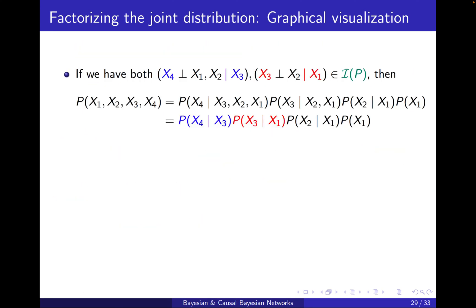Imagine that we additionally have this extra term, which we had in the previous examples. Now we know that the joint distribution will be further simplified into this form.